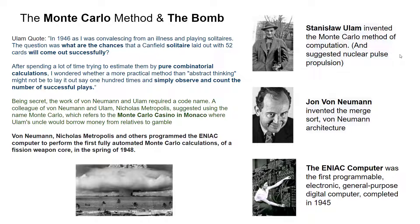The code name for this secret project - because they wanted to hide it from the Russians - was Monte Carlo, because his uncle lost all his money in a casino and it came from the solitaire thought. Von Neumann worked with that. You could be asked a question in the Leaving Cert about John Von Neumann and his contributions. The ENIAC computer was the first actual electronic digital computer - pretty snazzy. They ended up using it to calculate where artillery shells could land, not a super good civilian use, but it did lead to the computer I'm using right now.